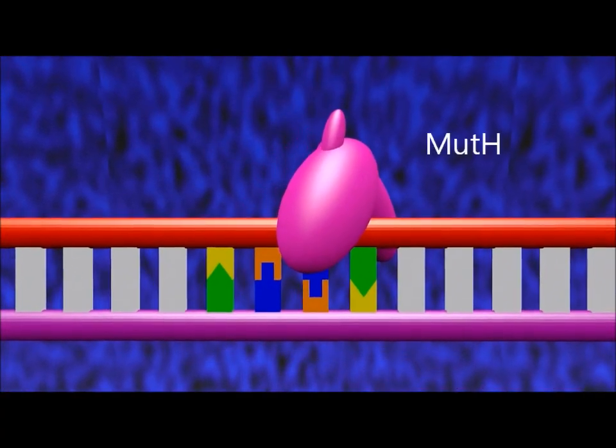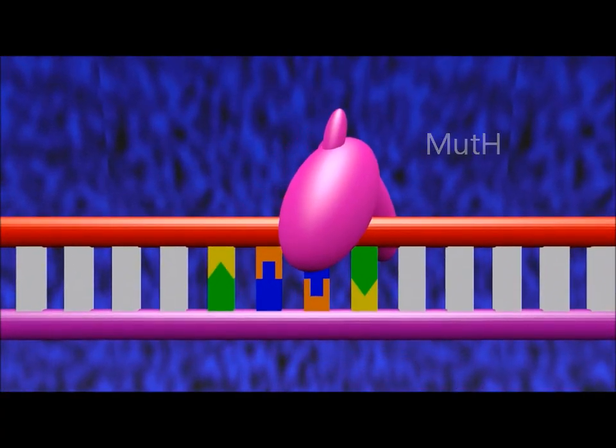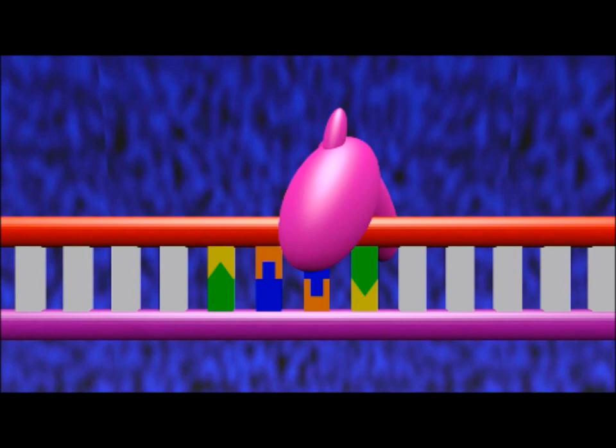MutH is able to differentiate between the newly synthesized strand and the template strand by the lack of methylation markers on the newly synthesized strand. This is why the pathway is also known as methyl-directed mismatch repair.